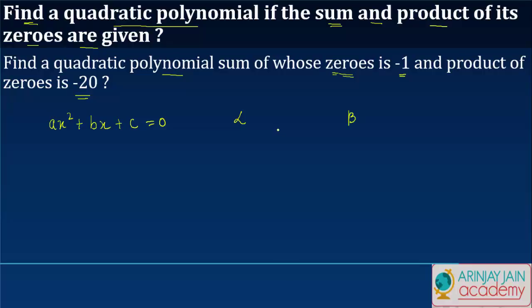In this case you are told that the sum of the zeros is minus 1, which means that alpha plus beta is equal to minus 1, and the product of the zeros alpha beta is equal to minus 20.